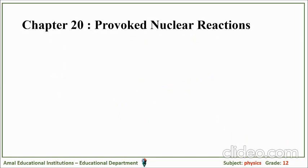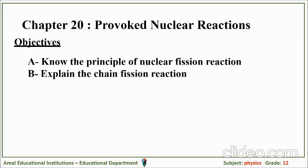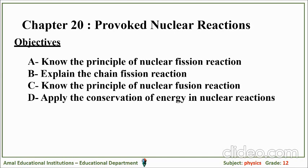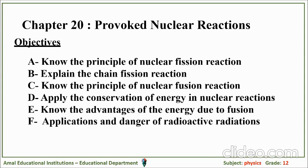We have in this chapter to treat the following objectives. In part one, we have to look for the nuclear fission reaction, knowing the principle of nuclear fission reaction, and explain the chain fission reaction. In the second part, we have to deal with the principle of nuclear fusion reaction, applying the principle of conservation of energy in nuclear reactions, know the advantages of energy due to fusion, applications, and dangers of radioactive radiation.